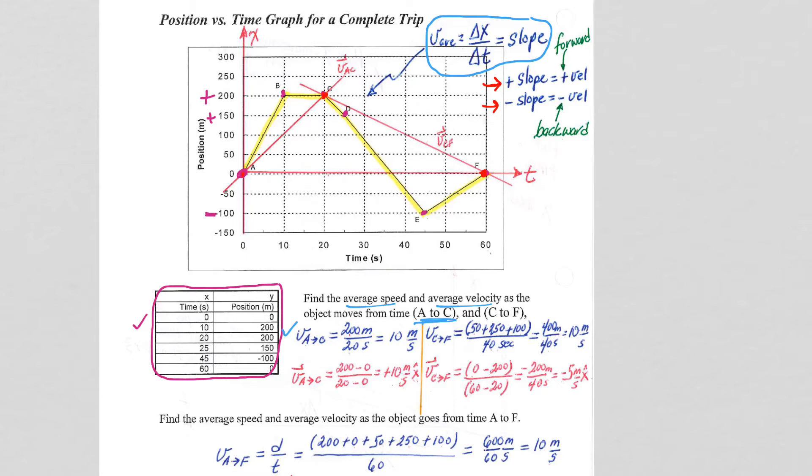So here we start at the origin, and we moved up to position 200, so that's my 200. And that's it in this case, because then we sat at position 200. We didn't move, so no distance. So that's why it's 200 over 20 seconds, average speed 10 meters per second.